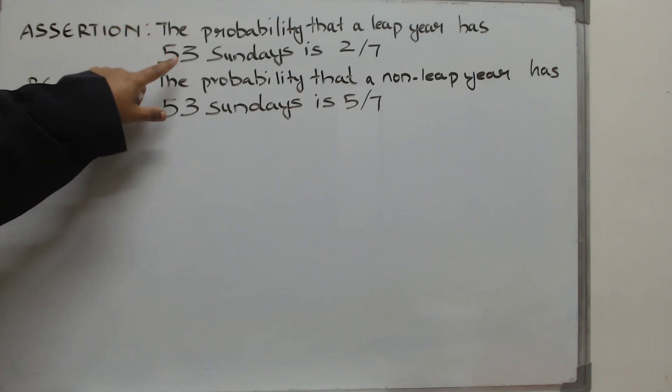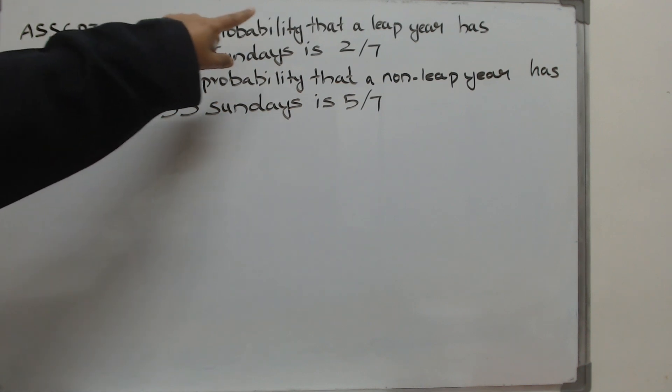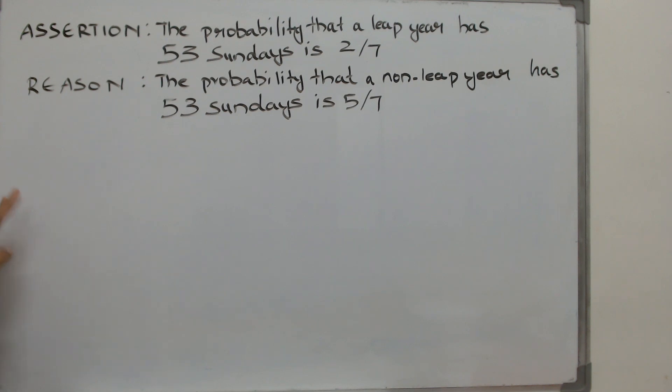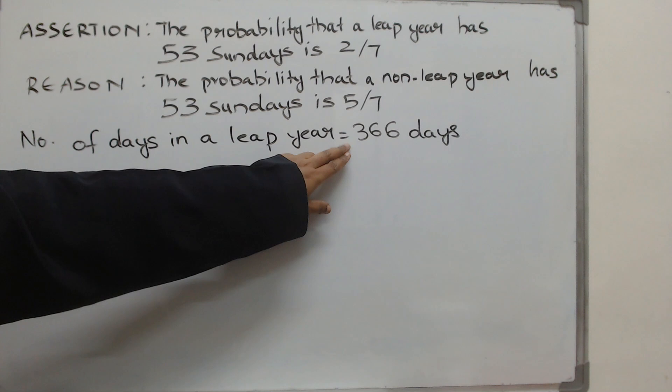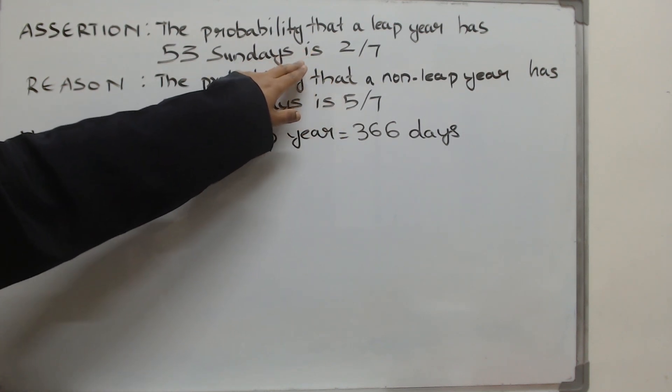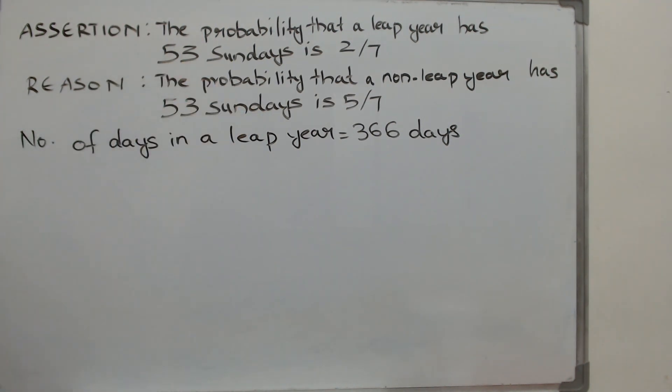It is about how many Sundays are there in a leap year. So first tell me how many days are there in a leap year? There are 366 days in a leap year. Now how many Sundays are there in a leap year?